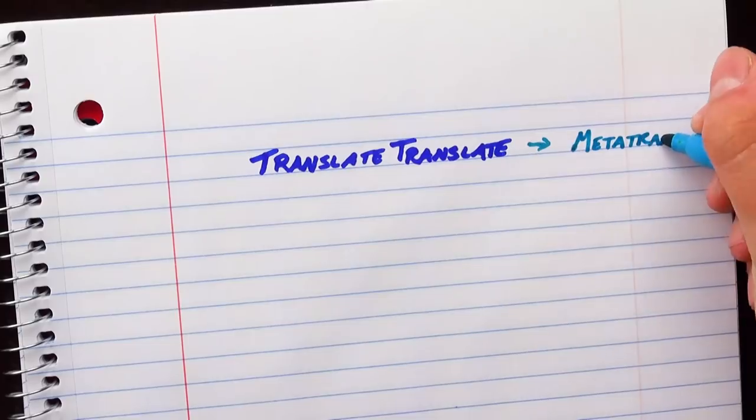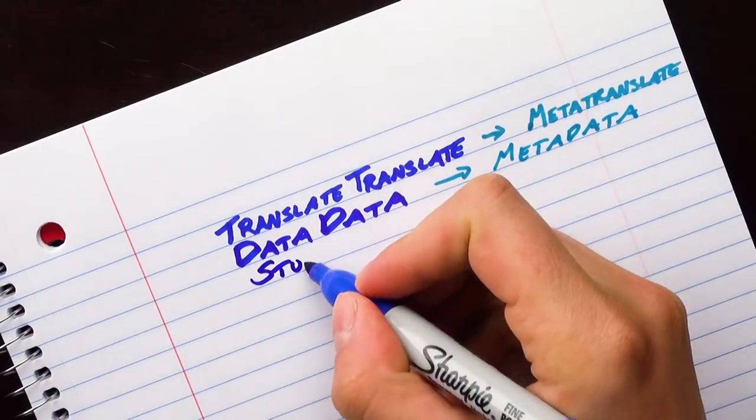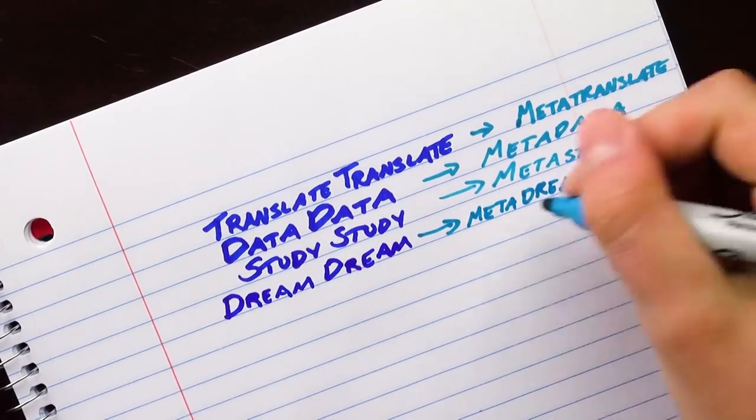It's funny because putting stuff places is your English translation of the word translation. So to translate translate, you metatranslate, just like how when you have data about data, that's metadata, or in science, if you do a study on a set of studies, it's a metastudy, or if you dream that you're dreaming, it's dreamception.